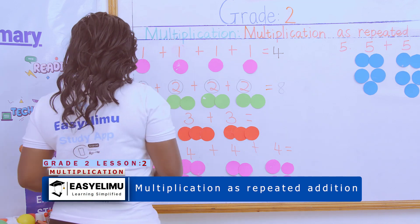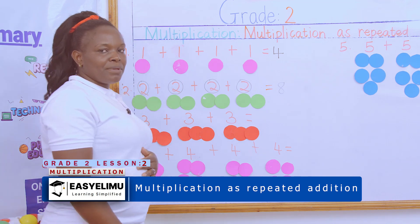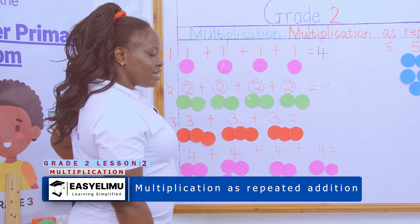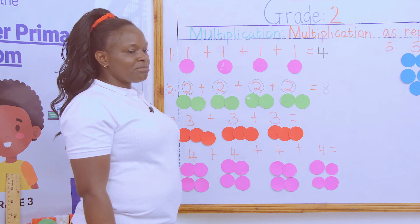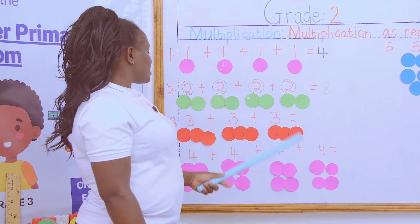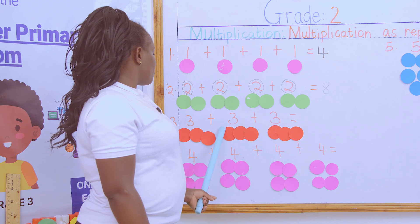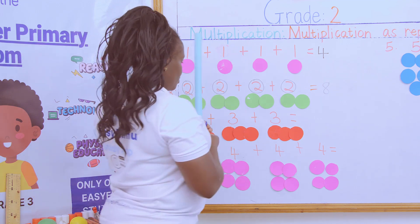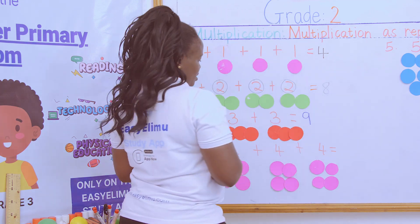Let's continue. The next one — how many times does three appear? Yes, Oscar? One, two, three. Three appears three times. So, what is the sum? The sum is one, two, three, four, five, six, seven, eight, nine. So, the sum of three, three times is nine.